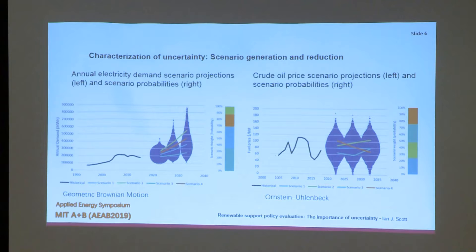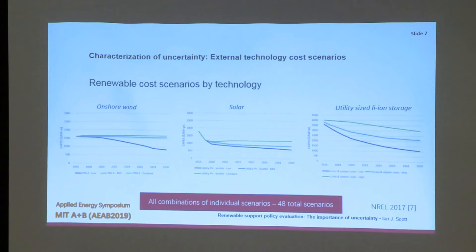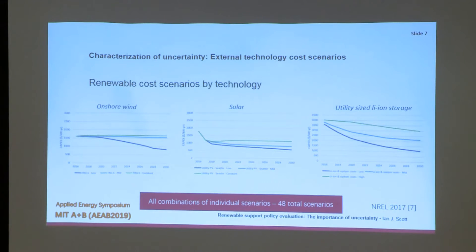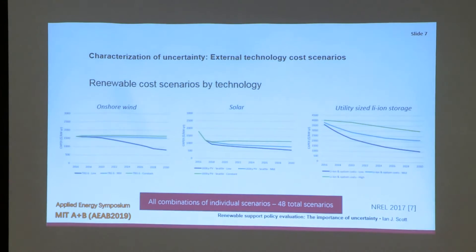We do the same for fuel prices, fitting a stationary process and generating four scenarios. For renewable technology costs, which are also pretty uncertain, we take some forecasts of prices and try each one in the model, giving each equal weight — though this is something you would sensitivity test. In total, we end up with 48 combinations: four demand, four fuel, and three cost scenarios.